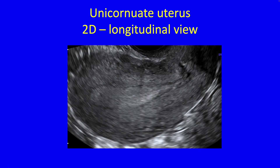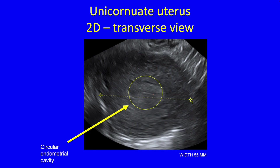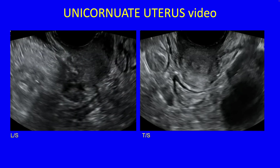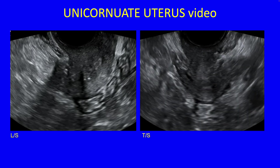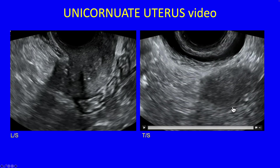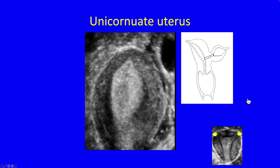A unicornuate uterus — in 2D you might think it's completely normal. The longitudinal view of the endometrial cavity just looks normal. In the transverse view you need to be on the lookout: the cavity is circular, and no matter how high or low you go, it stays circular — it never broadens out into a broader endometrium. In the longitudinal plane video clip, going from side to side it looks completely normal, but in the transverse view the endometrial cavity never widens out and goes to one side, because there's only one interstitial portion of a fallopian tube. On 3D, a unicornuate uterus is immediately obvious — it looks a bit like a banana.